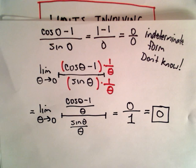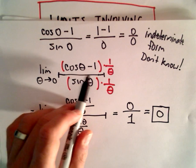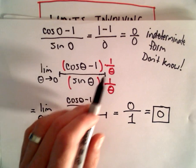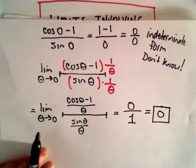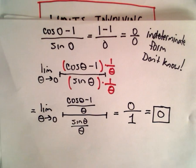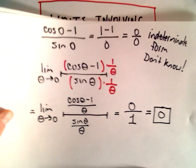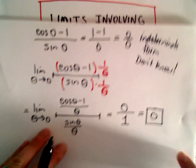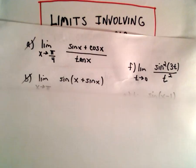So it was really close to those limit results — if we just divide numerator and denominator by theta, we're in business. That's the key observation on the first one.